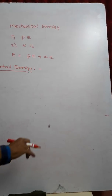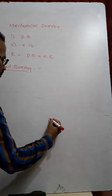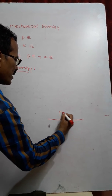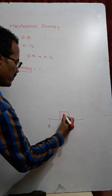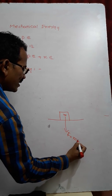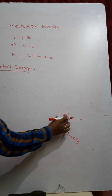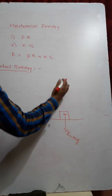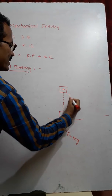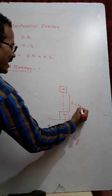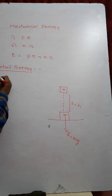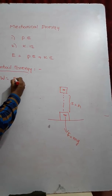Now I derive an expression for potential energy. This is the ground. Consider a body on the surface of the ground whose mass is m. Its weight F is equal to mg, acting vertically downwards. Now the body is lifted vertically upwards to a height h against gravitational force. For this, we need to do work. The work done is given by F·S·cos θ.